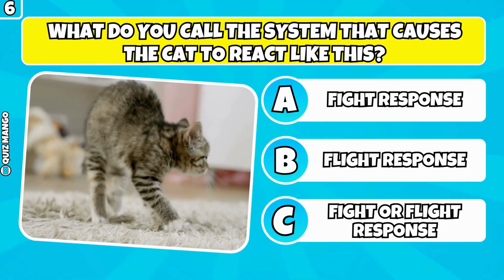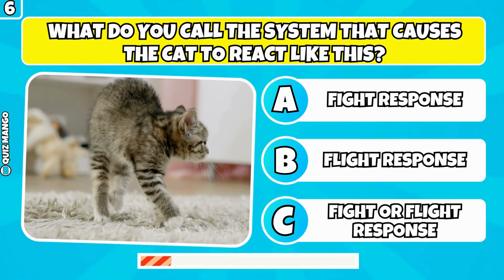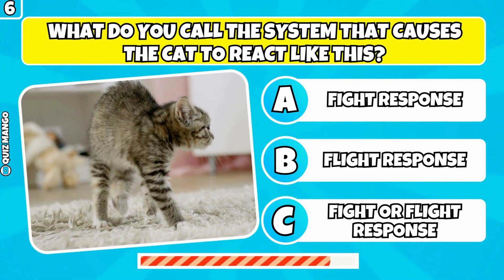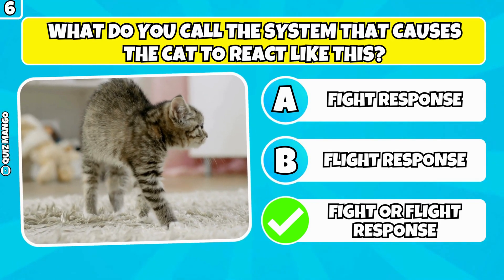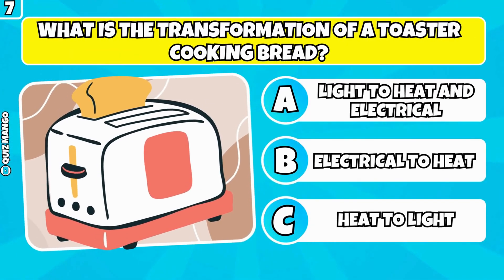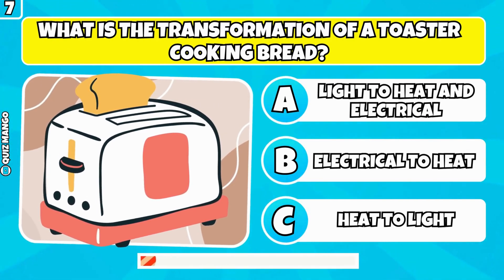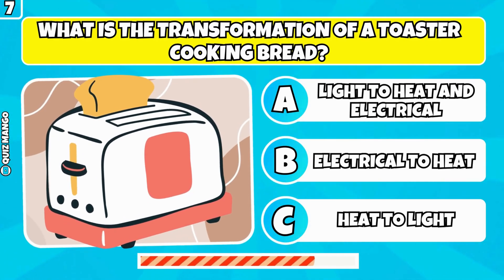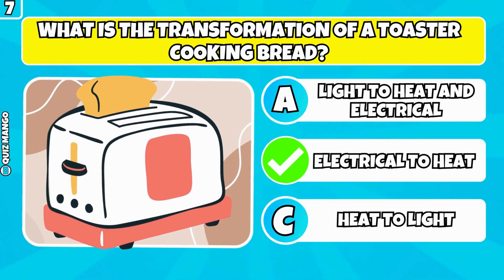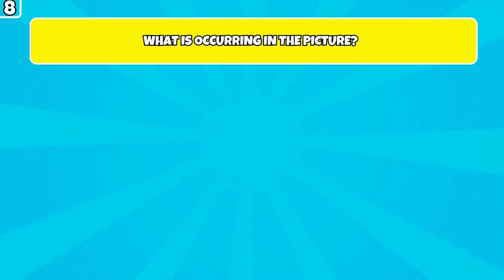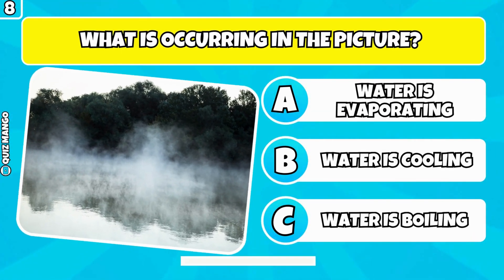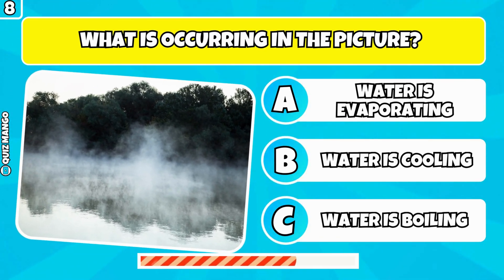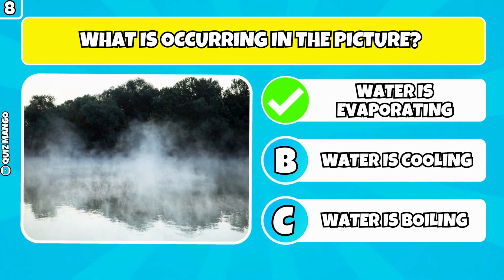What do you call the system that causes the cat to react like this? It's known as the fight or flight response. What is the transformation of a toaster cooking bread? It's electrical to heat and light. What is occurring in the picture? It's called evaporation.